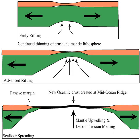Sheared margins form where continental break-up was associated with strike-slip faulting. A good example is found on the south-facing coast of West Africa. Sheared margins are highly complex and tend to be rather narrow. They differ from rifted passive margins in structural style and thermal evolution during continental break-up. As the seafloor spreading axis moves along the margin, thermal uplift produces a ridge that traps sediments, allowing thick sequences to accumulate. These types of passive margins are less volcanic.